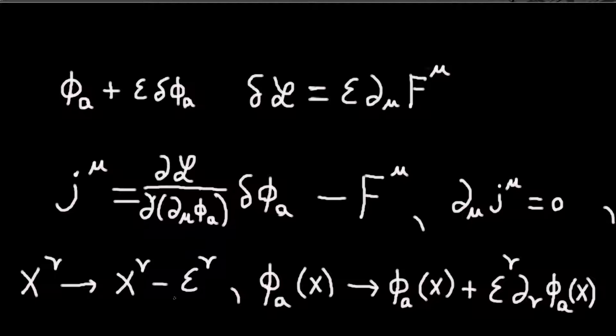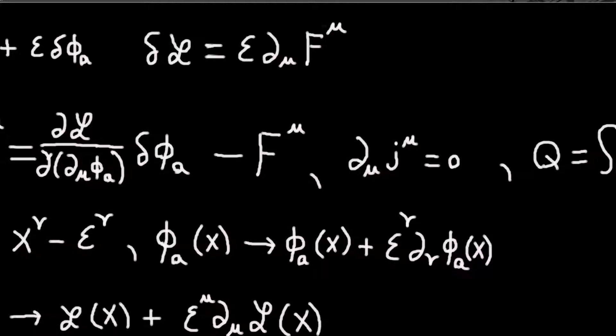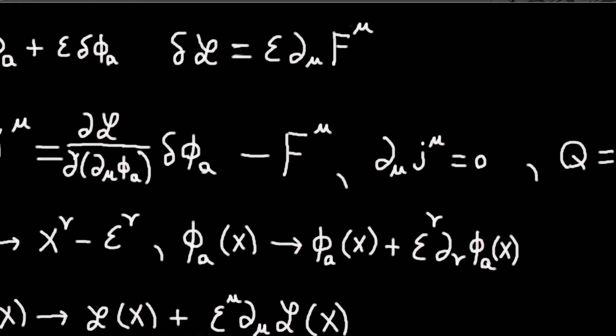But anyway, if we do this, our fields will change because they depend on the coordinates. And just by the chain rule, they will change like this. And the Lagrangian also depends on the coordinates, so it will change in the same kind of way.